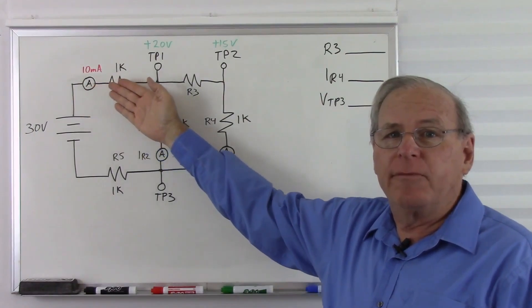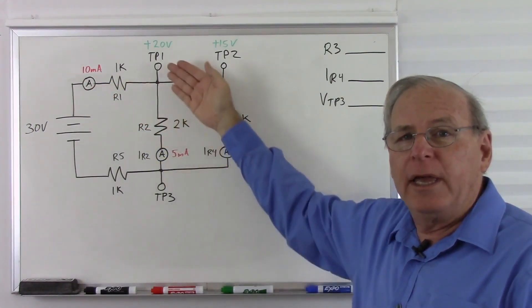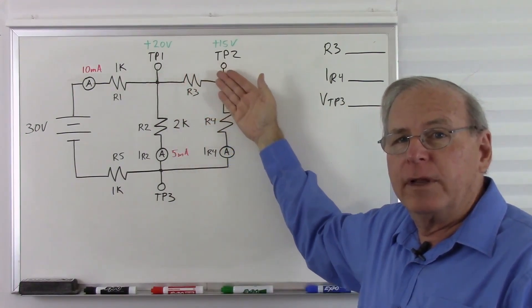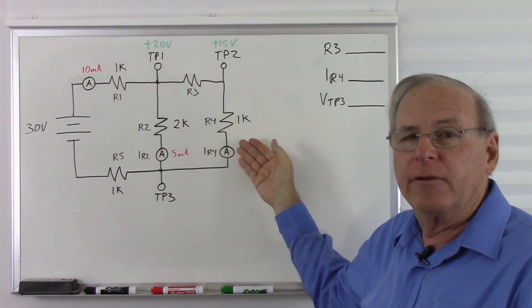There's 10 milliamps coming from the battery. It splits this way and splits that way, and that's 5 milliamps going this way. So how much current went this way? And it's obviously going to be another 5 milliamps.